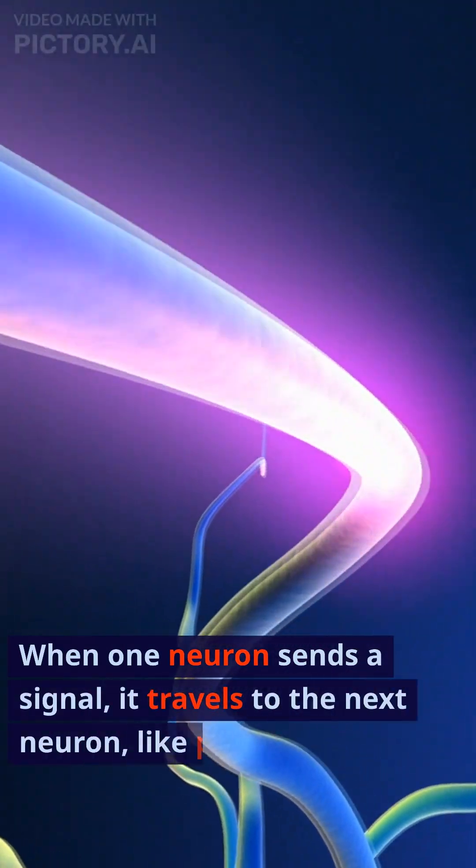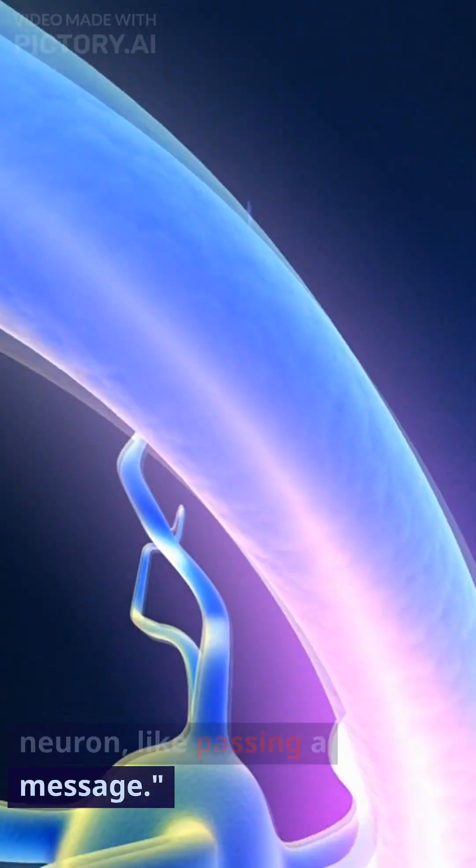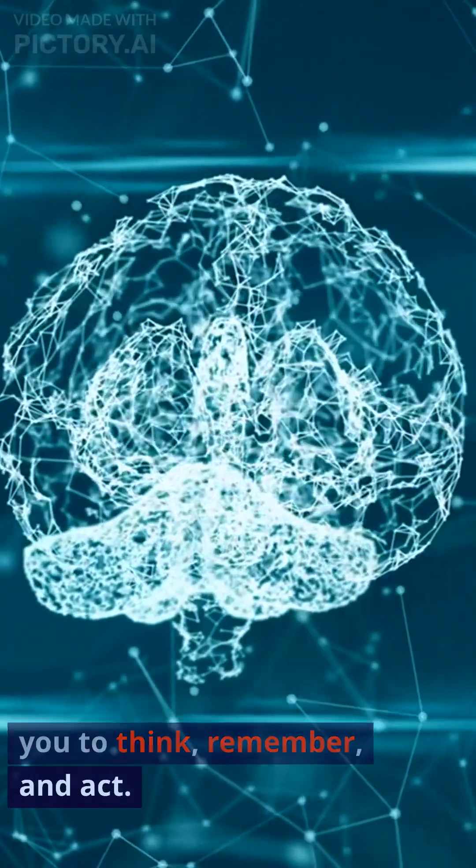When one neuron sends a signal, it travels to the next neuron, like passing a message. This neural network allows you to think, remember, and act.